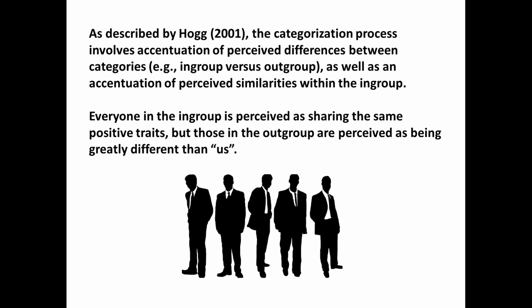I think this explains a lot of what we're seeing in the year 2020 in terms of hostility between different groups, politically speaking, in the United States and elsewhere. As described by Hogg in 2001, the categorization process involves accentuation of perceived differences between categories — in-group versus out-group differences get exaggerated — as well as accentuation of perceived similarities within the in-group. Everyone inside the in-group is perceived as sharing the same positive traits. But members of the out-group are perceived as greatly different. This brings in a social cognitive aspect that the older theories did not include.